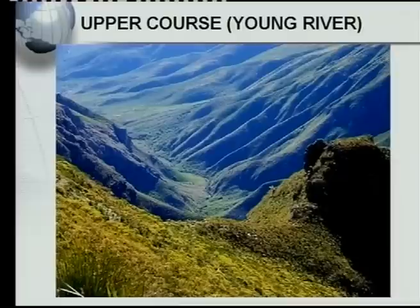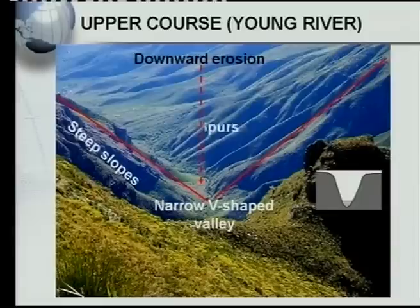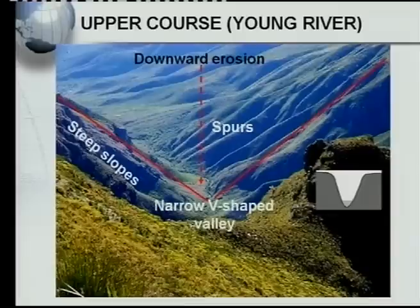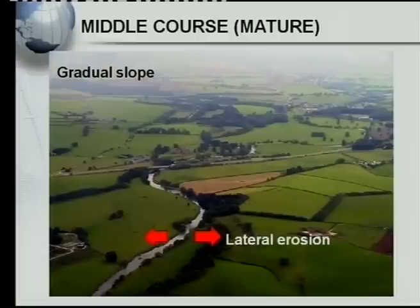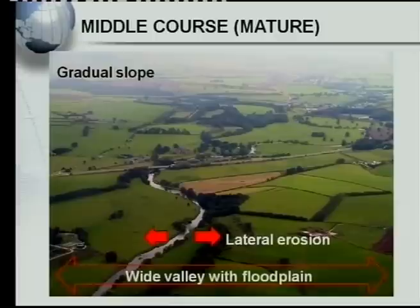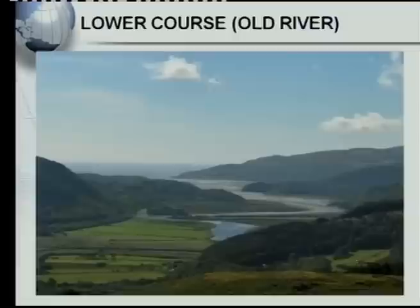Now let's look at some photos. In the upper course you can see steep slopes, lots of downward erosion, a narrow V-shaped valley, and a few interlocking spurs. In the middle course — or mature river — there are no mountains, so you get a more gradual slope. Lateral erosion can now take place, so the river starts broadening. You can see a wide valley with a flood plain and meanders.